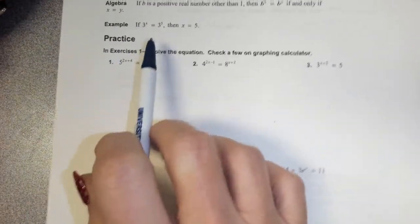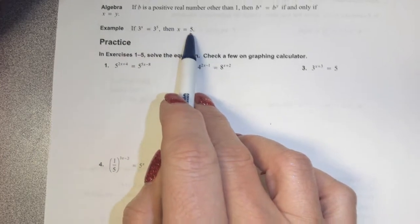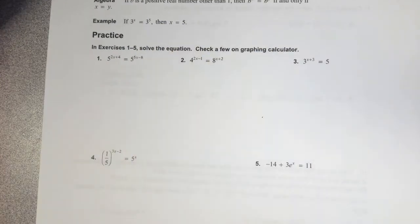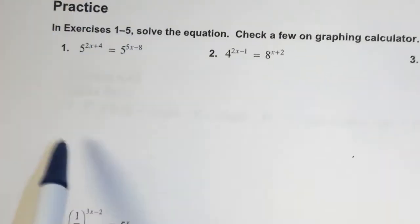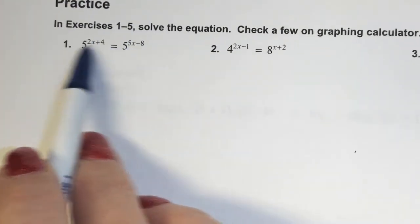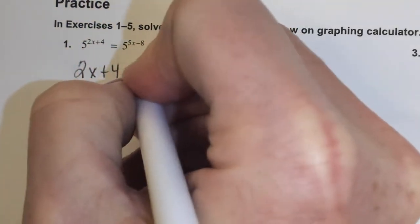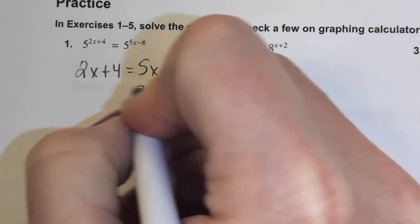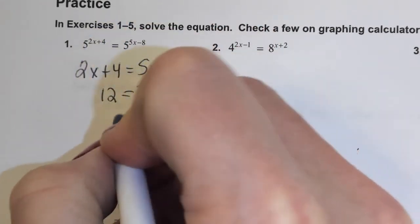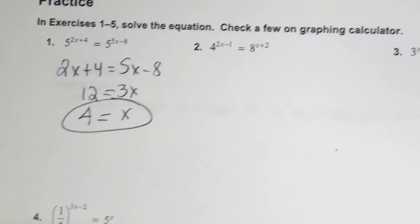Look at this example: if we have 3 to the x equals 3 to the 5th, it's obvious that x is 5. That's the kind of thing we'd like to have — like bases. In this case we have an exponential equation with like bases, so all we have to do is set those exponents equal to one another. Solving this, we get 3x equals 12, and so x is going to be 4. That's our solution.